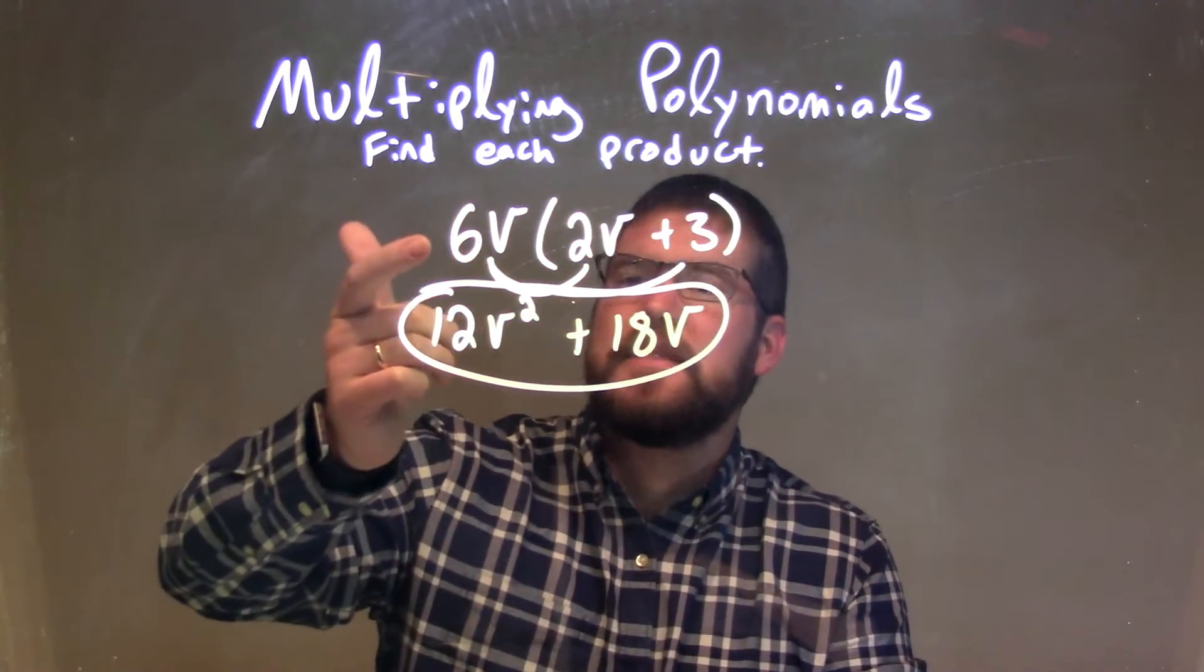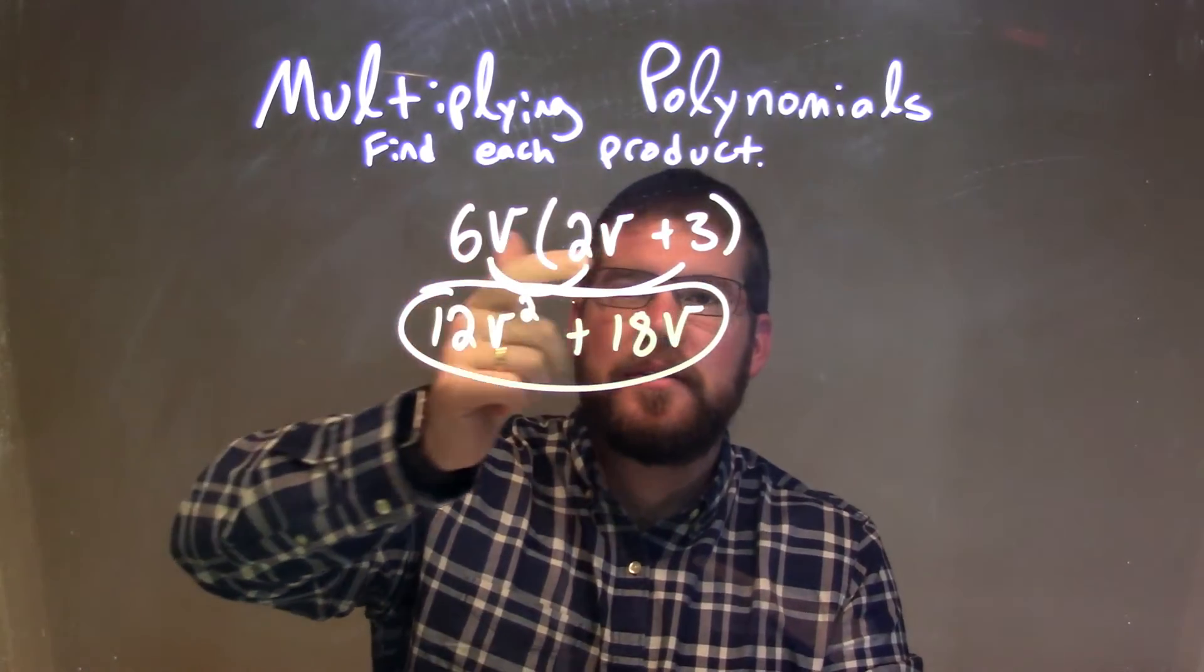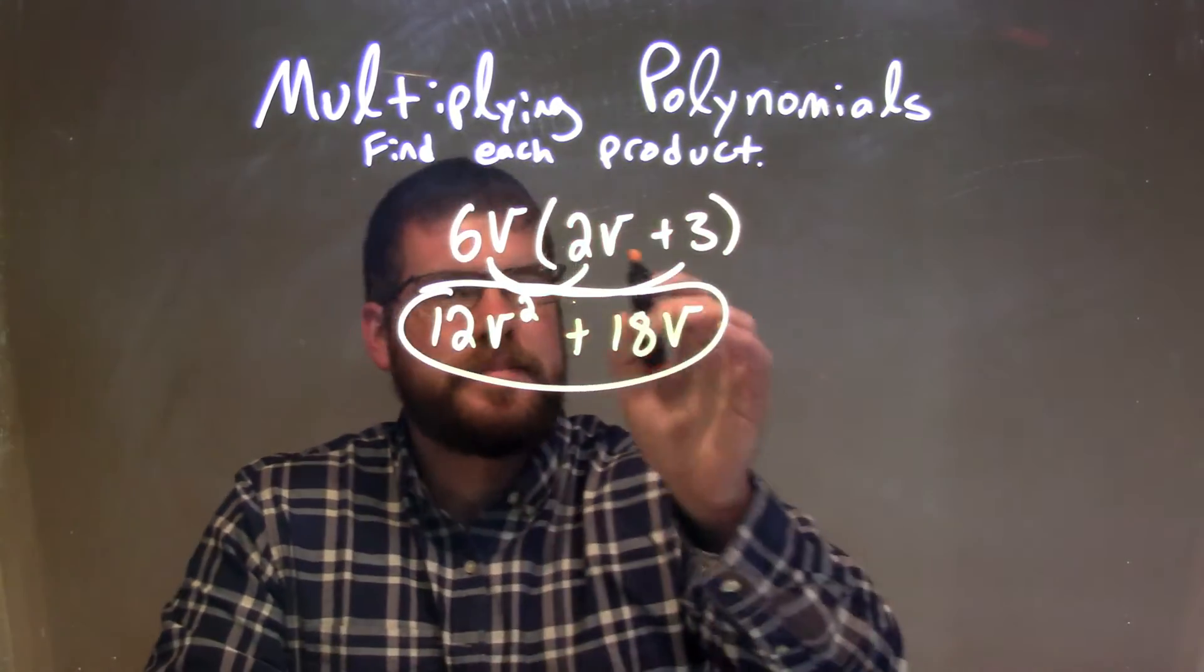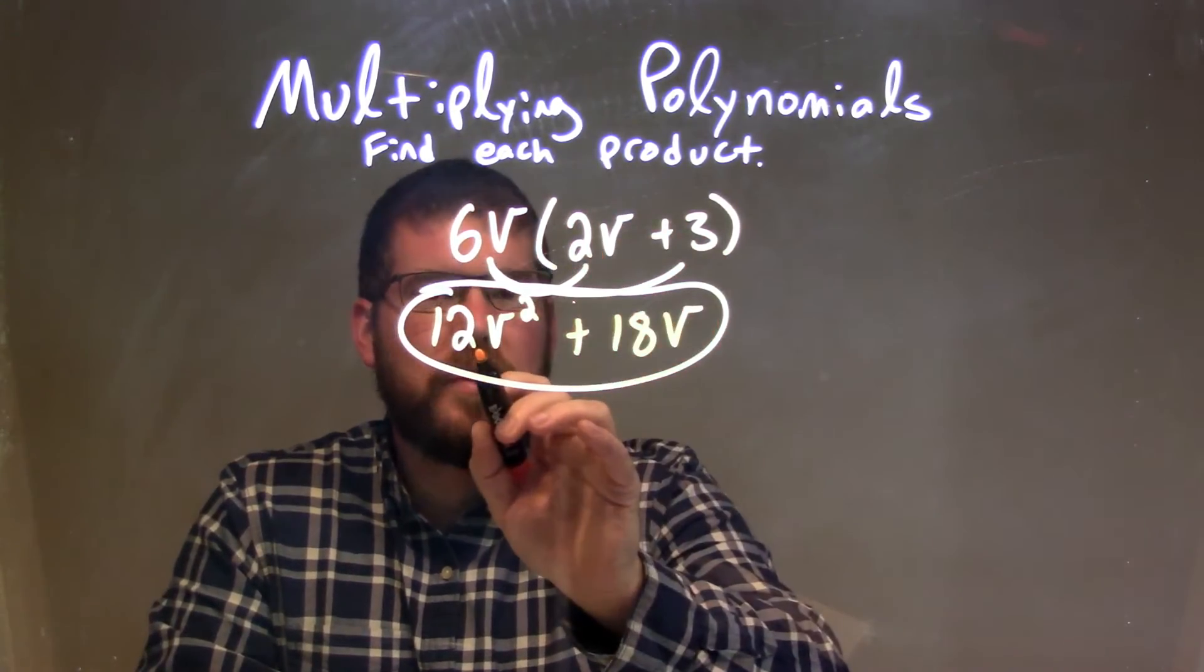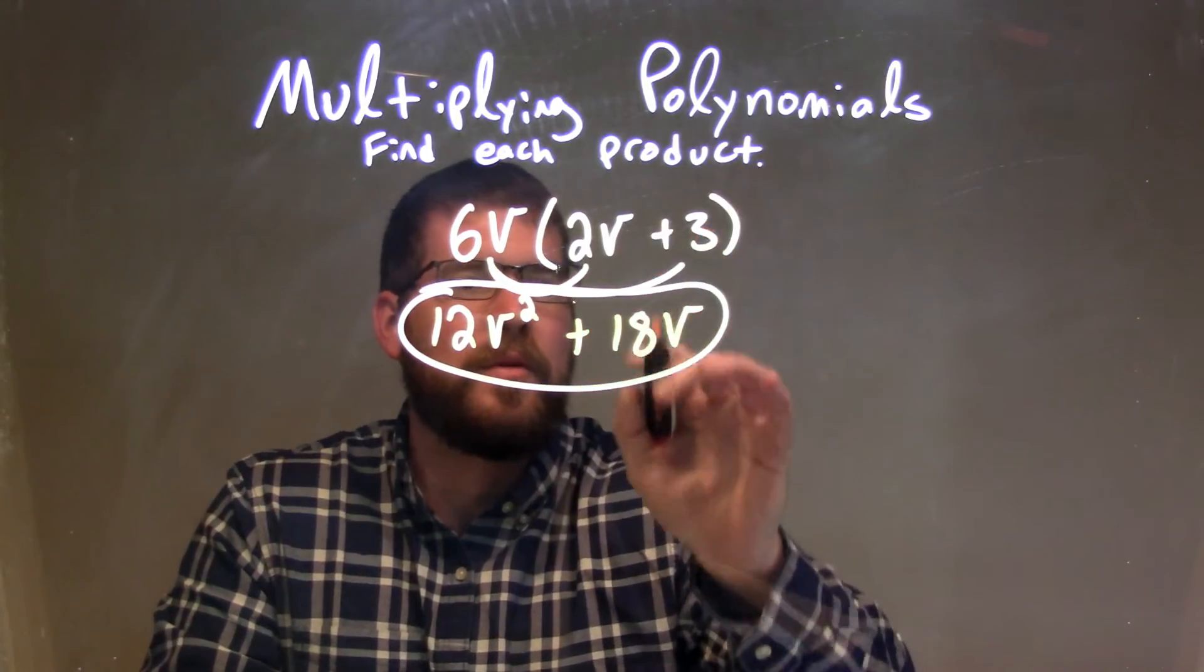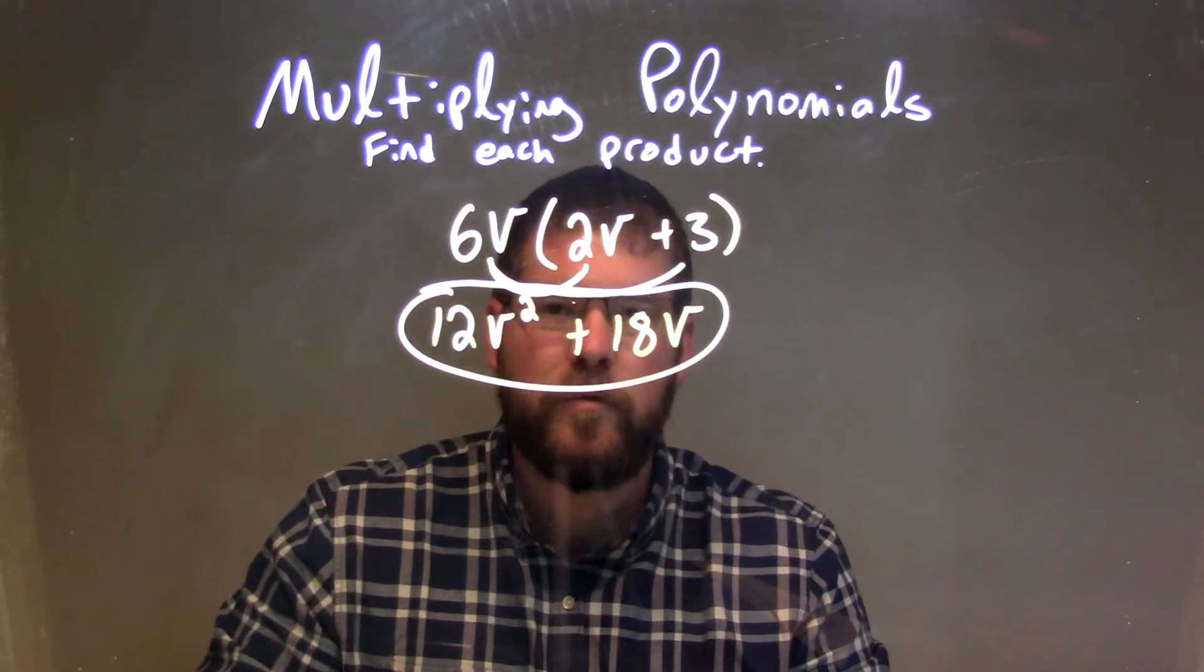So let's recap. We're given 6V times 2V plus 3. I need to multiply 6V to both parts, right? Both parts here in the parenthesis there. So 6V times 2V was 12V squared, and 6V times 3 was 18V, giving me my final answer of 12V squared plus 18V.